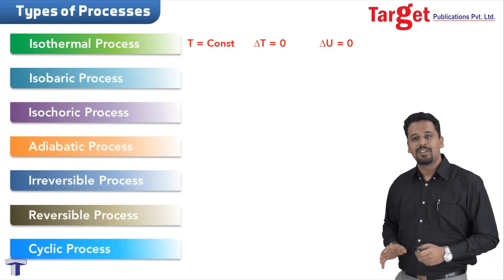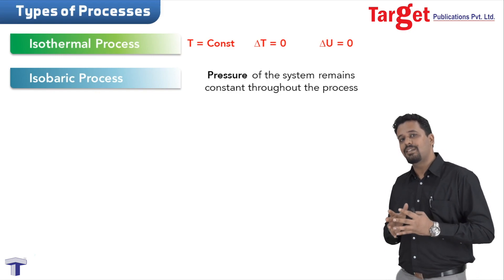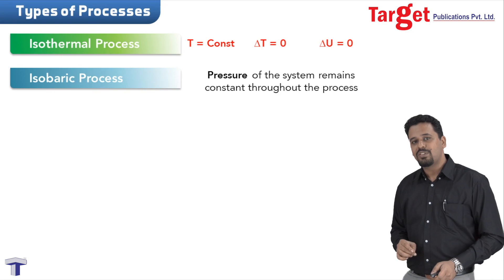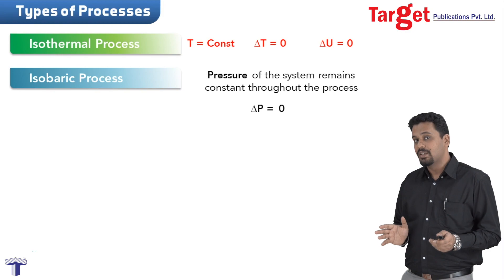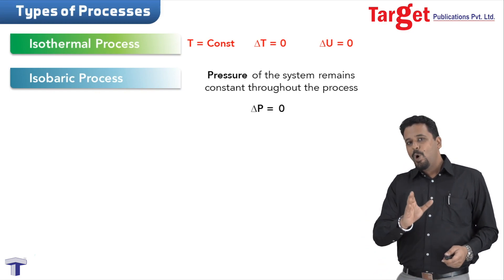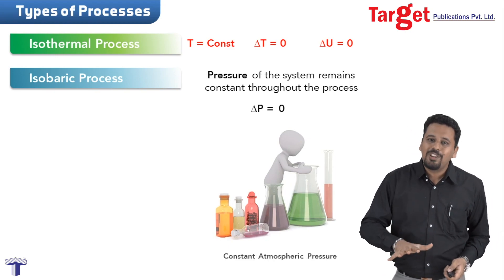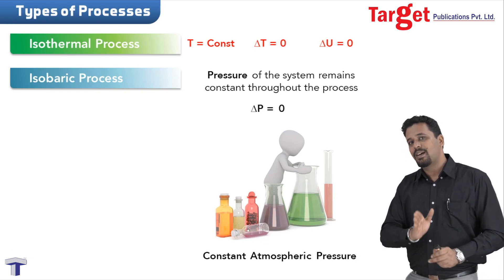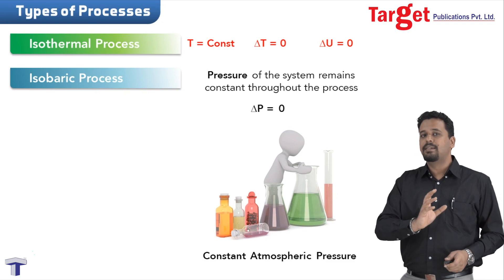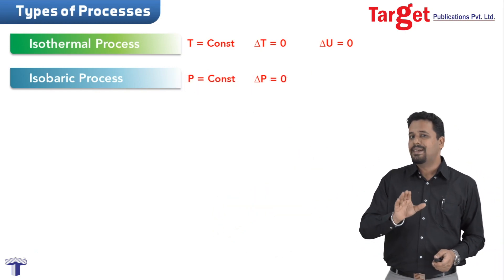The next process is isobaric process. Isobaric process is that process where the pressure of the system remains constant throughout. The change in pressure, delta P, is zero. All experiments conducted under open atmosphere — all open experiments — are conducted under constant atmospheric pressure, so such experiments are all isobaric.